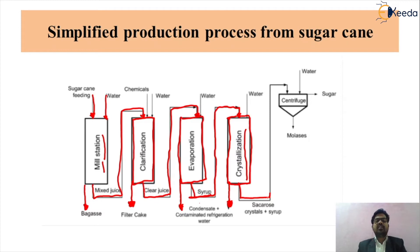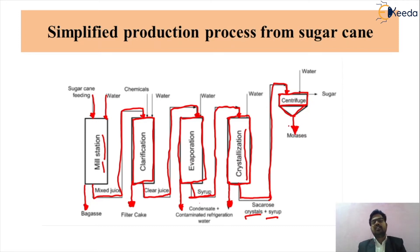After crystallization we get sacros, which is a product consisting of crystals plus syrup. The sacros goes through the centrifuge, where molasses are removed. Molasses is a type of waste from which byproducts such as ethanol and different minerals can be formed. After adding some water in the centrifuge, the finished product obtained is sugar. These are the simplified production steps from sugar cane in the sugar industry.